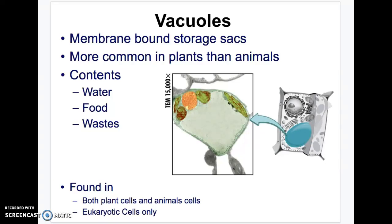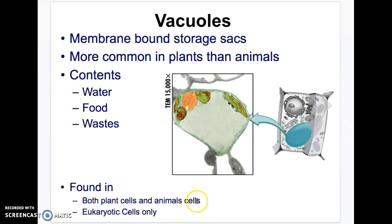Vacuoles are your storage — think of them like a pantry. They hold food, water, and waste. There are two types: really small ones in animal cells, and really large ones in plant cells — those are the central vacuoles.